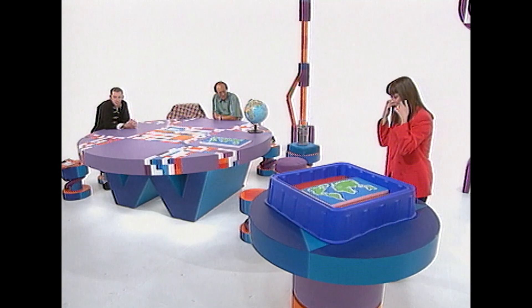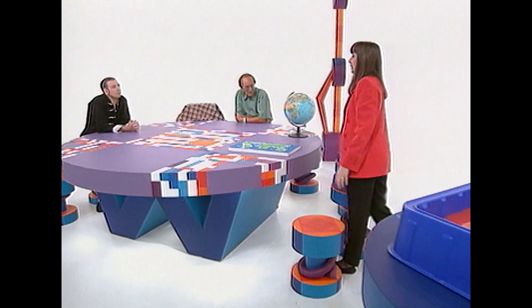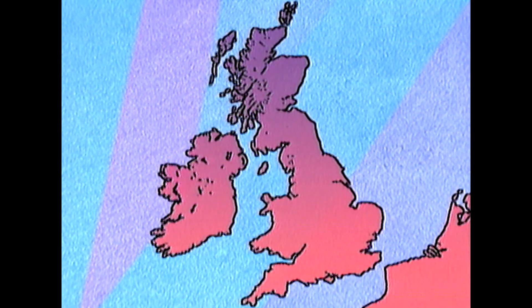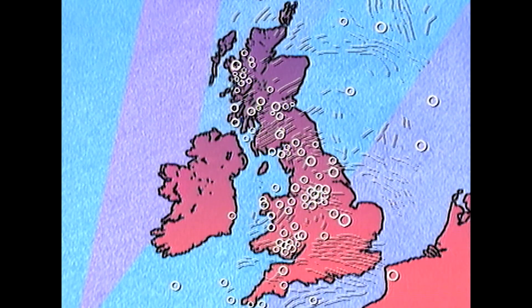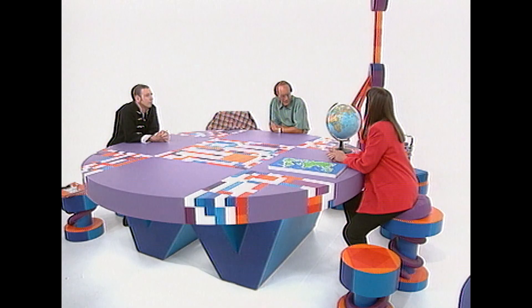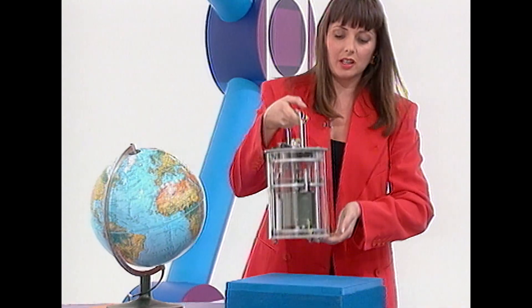But earthquakes don't just happen in exotic places like Los Angeles. They also happen in Britain, because there are a number of fault lines in Britain. Have a look at this map — you can see the fault lines there. These actually generated 300 earthquakes in Britain last year. Mind you, they were quite small. We only felt 50 of them, and even those were sort of slight tremors. But how do you measure earthquakes? You do that by using one of these, which is known as a seismometer.